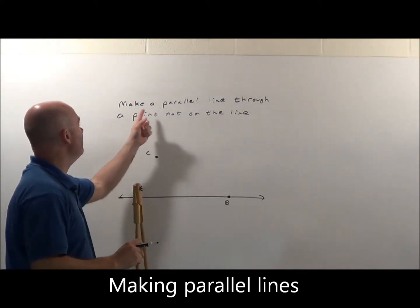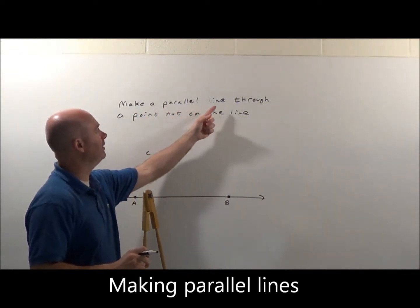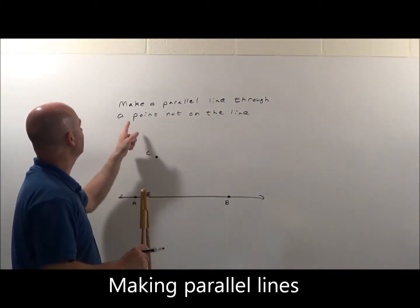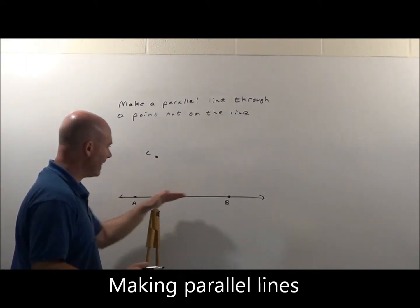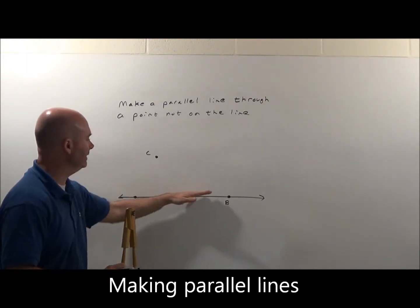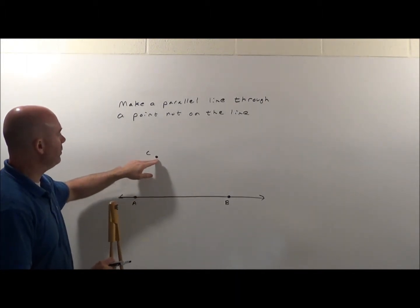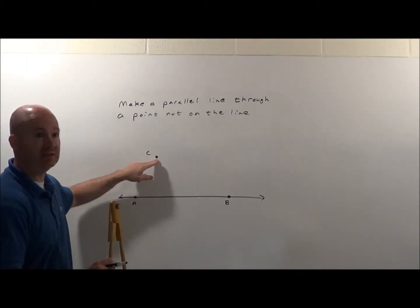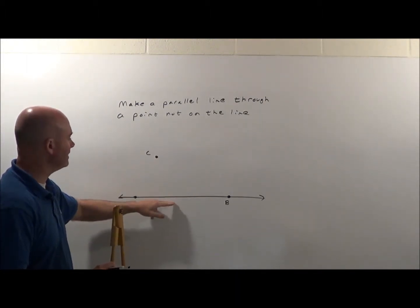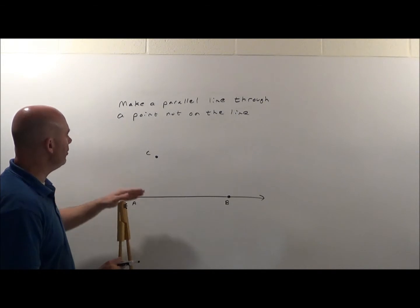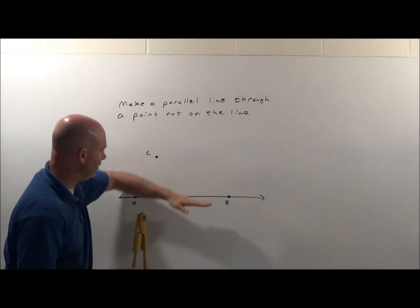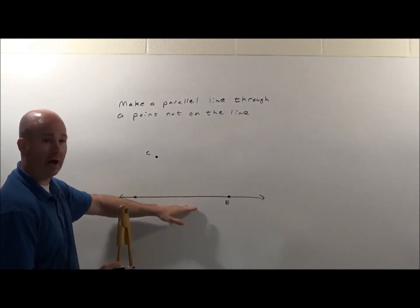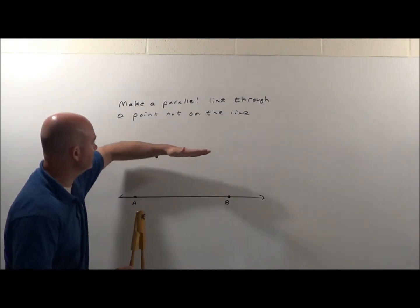Alright, we want to make a parallel line through a point not on the line. So we have this line here, and this point C that's not on this line, and we want to create a line that's parallel to line AB.